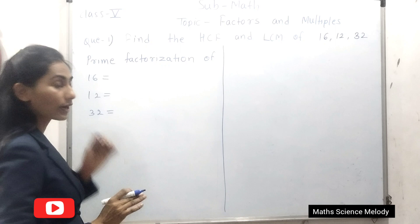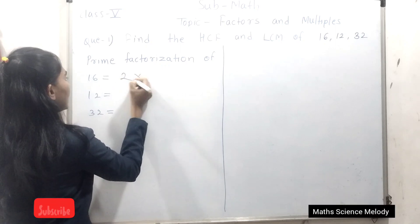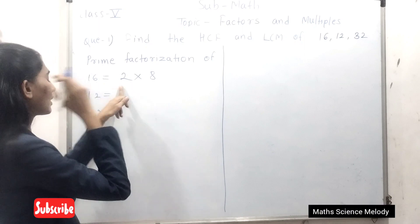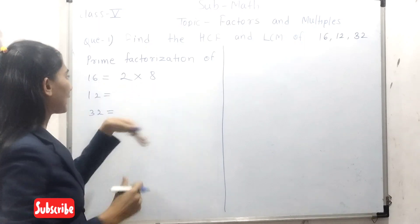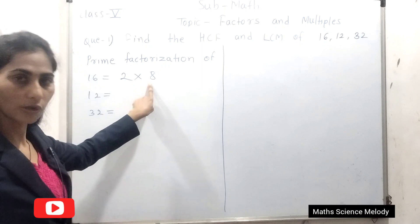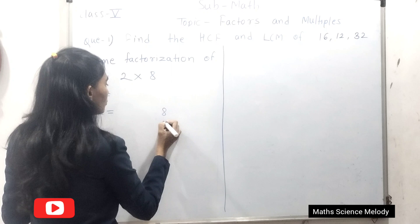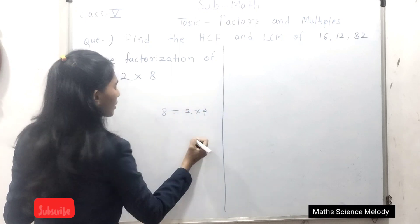Here, if you are getting confused how to write prime factorization, you can write by taking one prime number and one composite number. Then write down again in the form of prime, in the form of product of prime number. This composite number, you need to split it. Here, 8 times 8, we can write 2 multiplied by 4.